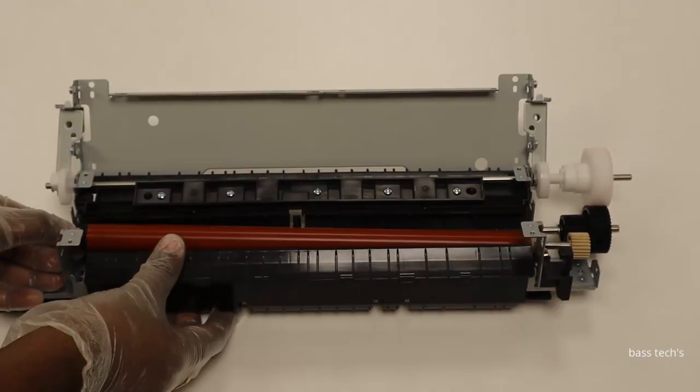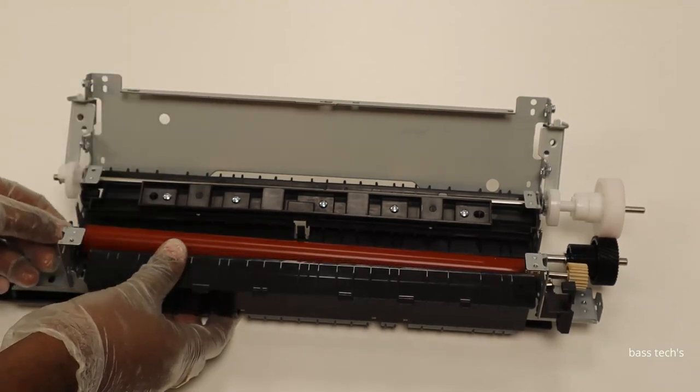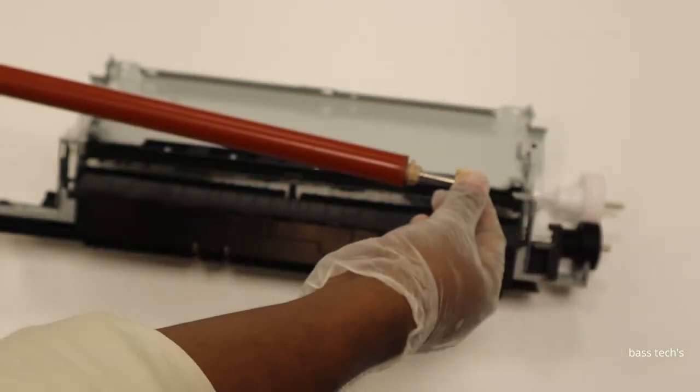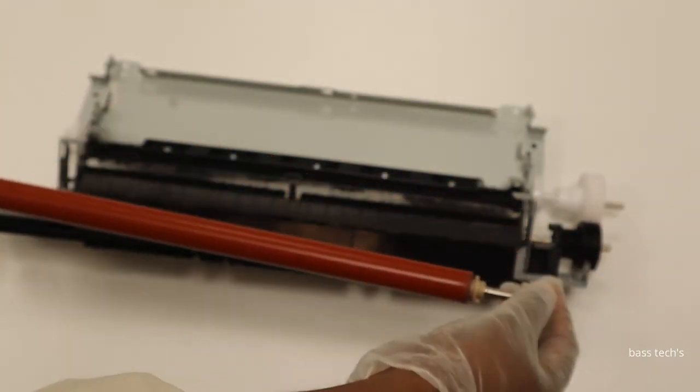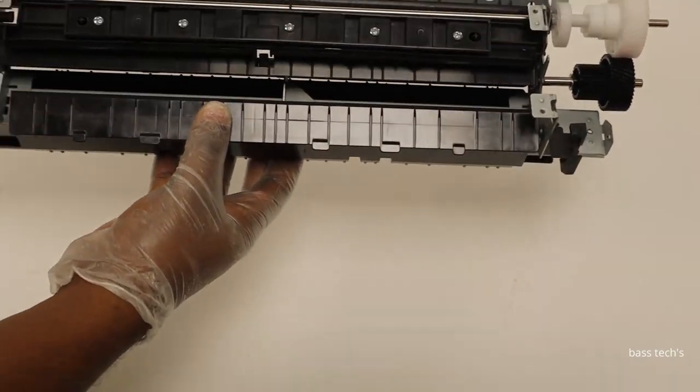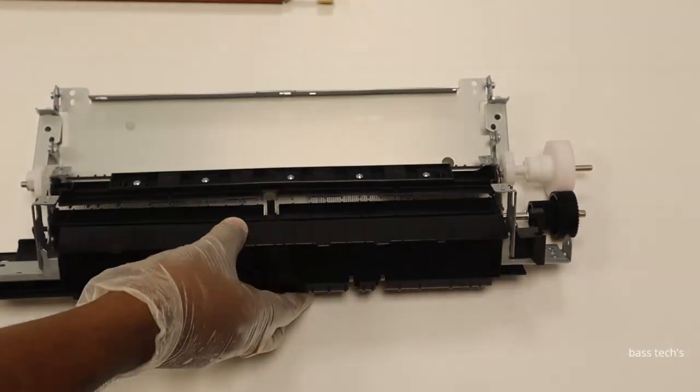but when the time comes, or if any physical damage happens unexpectedly, then you have to remove and replace the fixing assembly as well as the pressure roller. Now we have removed everything. This is just the frame. This is how we dismantle the fixing assembly.